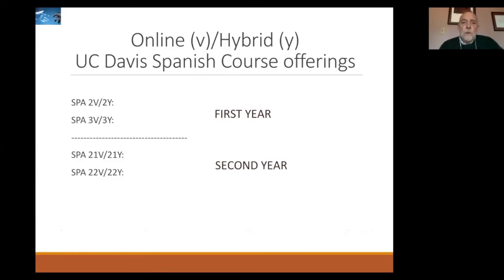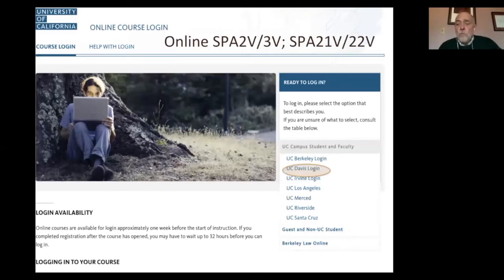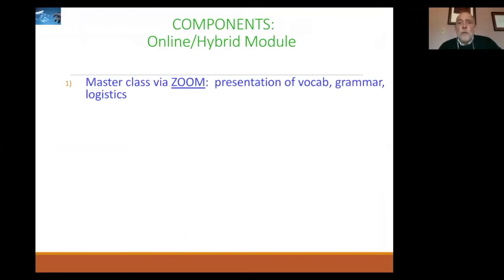At UC Davis we offer both online and hybrid courses. The hybrid courses are for our students at UC Davis, but the online courses are offered to all students in the UC system — the ten universities — and include the first and second year. This is the general portal where someone registers for a course, completely online. For a hybrid course we have a similar portal. Among the key components is a master class conducted through video conference using Zoom, where we present vocabulary, grammar, and logistics, and basically touch base with everyone.